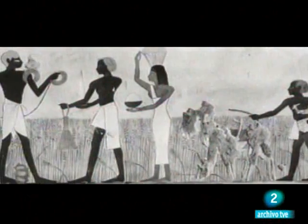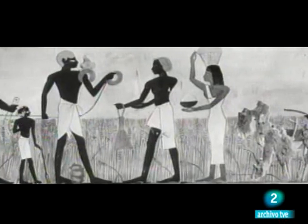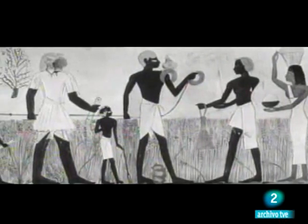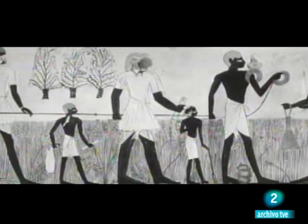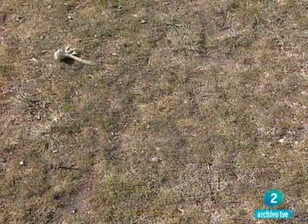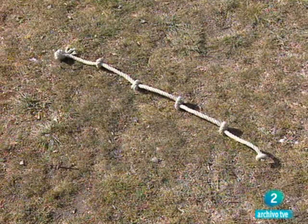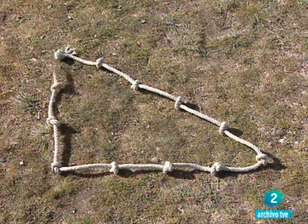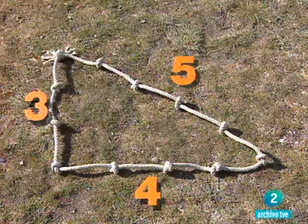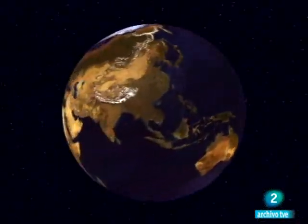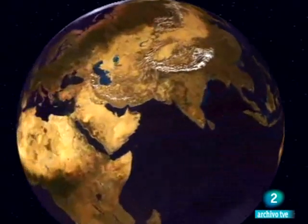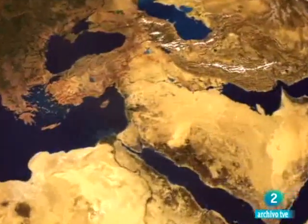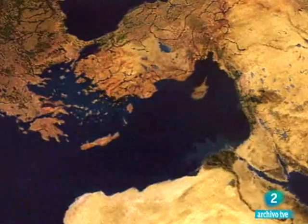Los egipcios eran auténticos especialistas en el arte de medir la tierra. Las inundaciones del Nilo les obligaba a trazar las lindes de los campos año tras año. Medir la tierra. Eso es, precisamente, lo que significa la palabra geometría. Pero aún hay un largo camino que recorrer entre esas manifestaciones utilitarias de las matemáticas y el auténtico nacimiento de la matemática como ciencia.